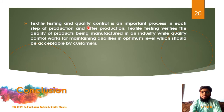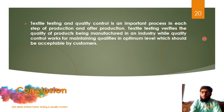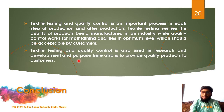Conclusion: textile testing and quality control is an important process at each step of textile production and after production. Textile testing verifies the quality of products being manufactured in an industry, and quality control works for maintaining the quality of products at an optimum level acceptable by both customer and industry. Additionally, textile testing and quality control is also used for research and development purposes, because if any new product is being developed, its testing is compulsory in order to check its properties and specifications.